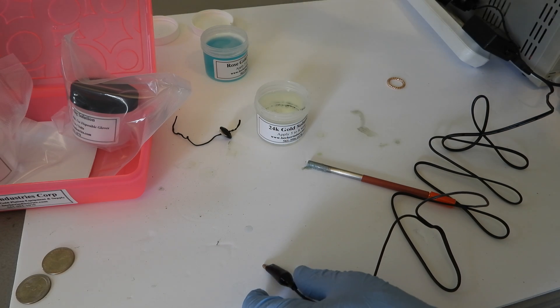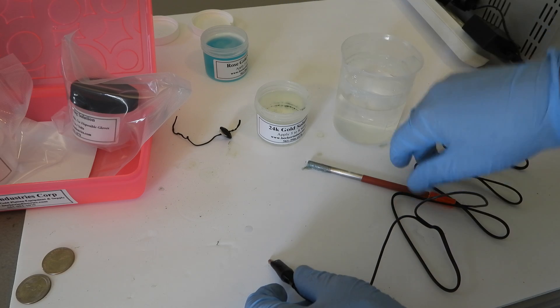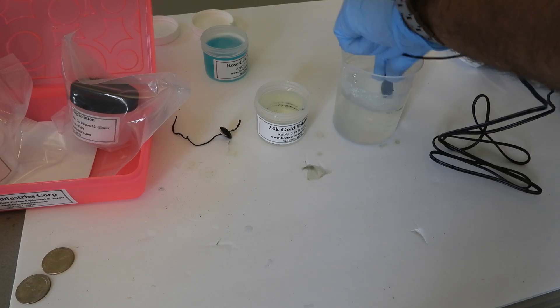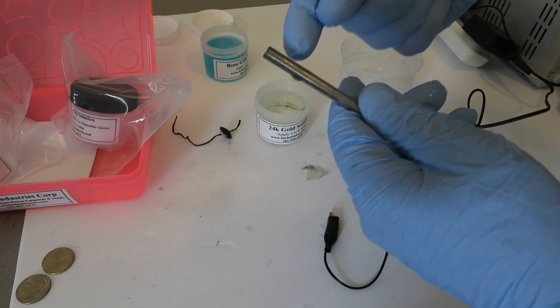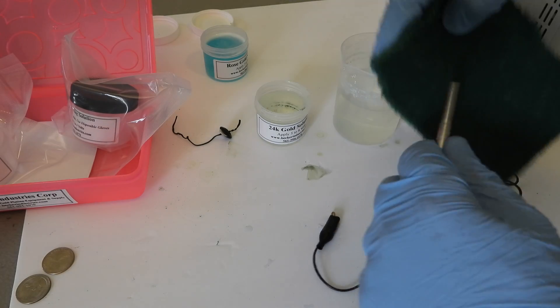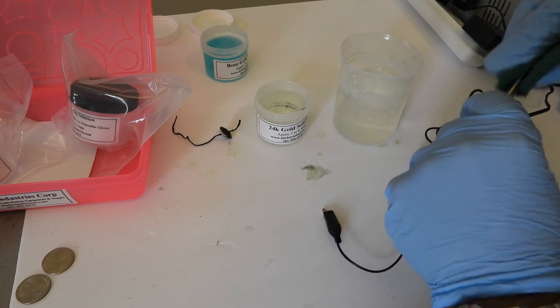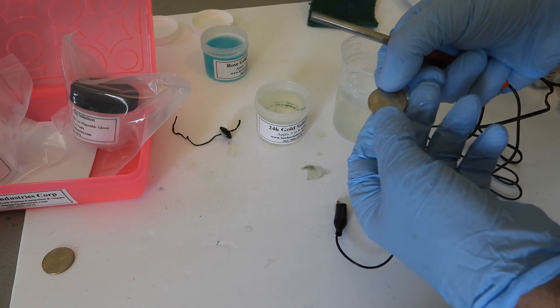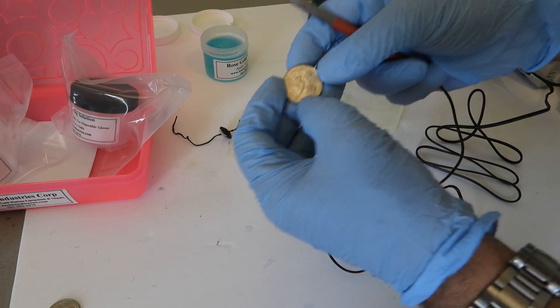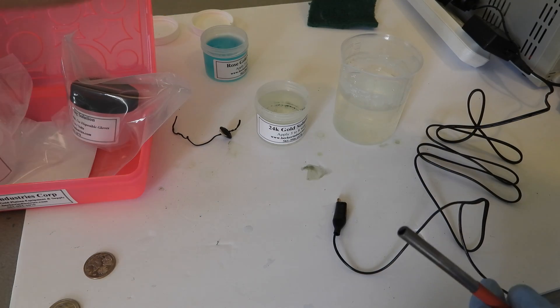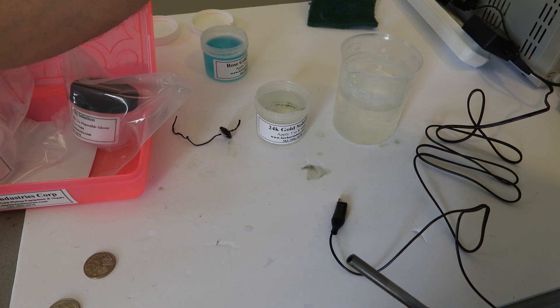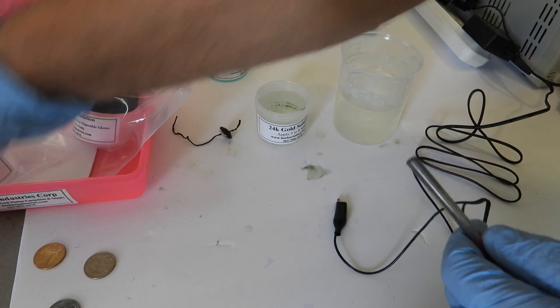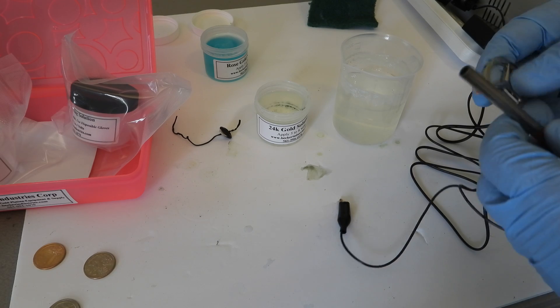Now the same thing goes with the 24k gold. Every time you're using different solutions, just rinse your plating anode. If it's dirty, just get a scotch pad and just clean it up. Be sure your parts are polished. Have a mirror shine. If you have a mirror shine, then your parts will be really shiny when you apply the gold.